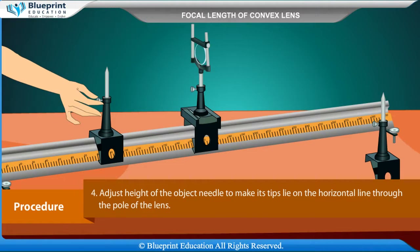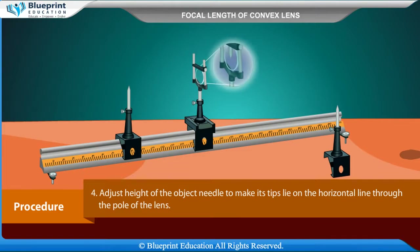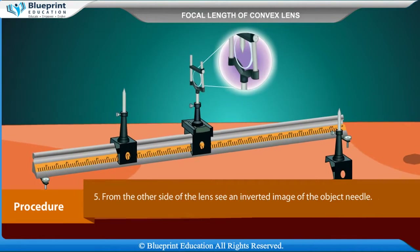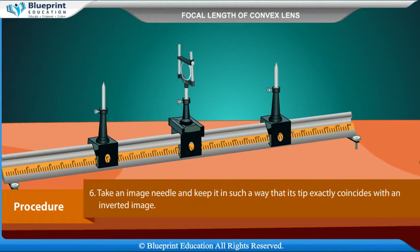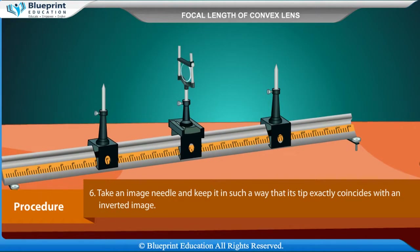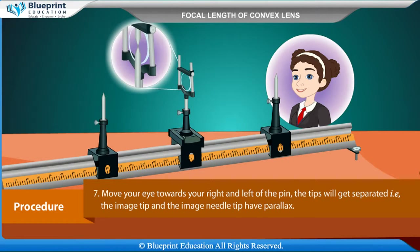Adjust the height of the object needle so that its tip lies on the horizontal line through the pole of the lens. From the other side of the lens, observe the inverted image of the object needle. Take an image needle and position it so that its tip exactly coincides with the inverted image. Move your eye to the right and left — if the tips get separated, parallax exists between the image tip and the image needle tip.